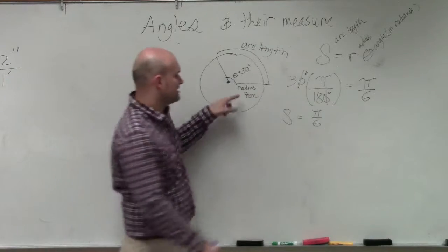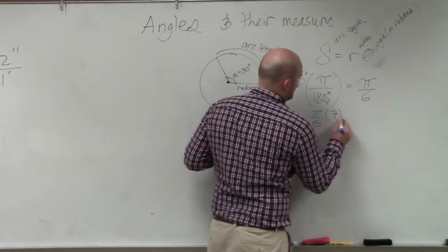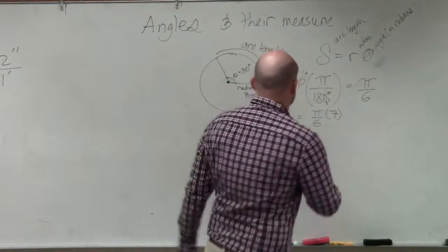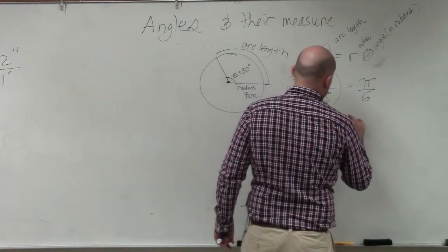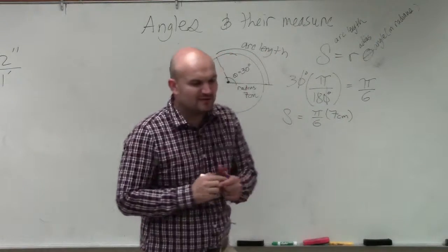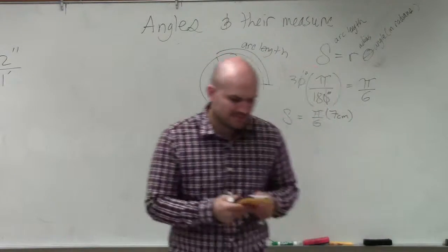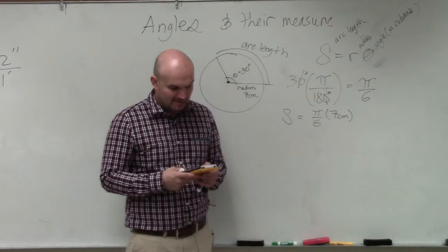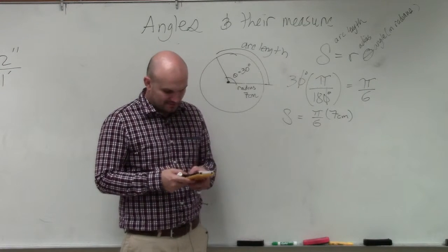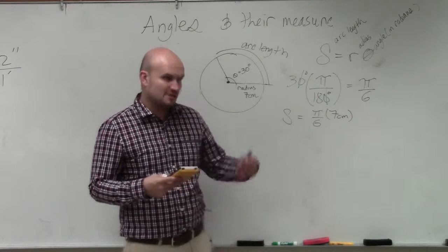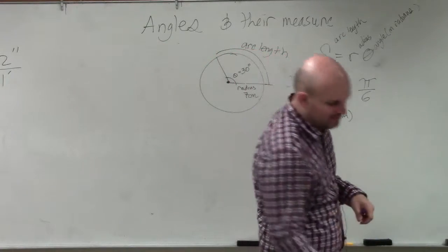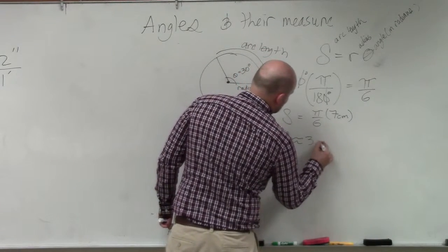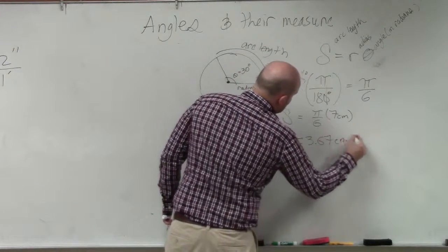So we have pi over 6 times 7. So now, all I'm simply going to do, I'm sorry, that's 7 centimeters. Sorry about that. I keep on forgetting to put those in when I'm using these problems. So now, all I'm simply going to do in my calculator is do 7 times pi divided by 6. And then I'm going to round to the hundredths, which would give me 3.67. So my arc length is approximately 3.67 centimeters.